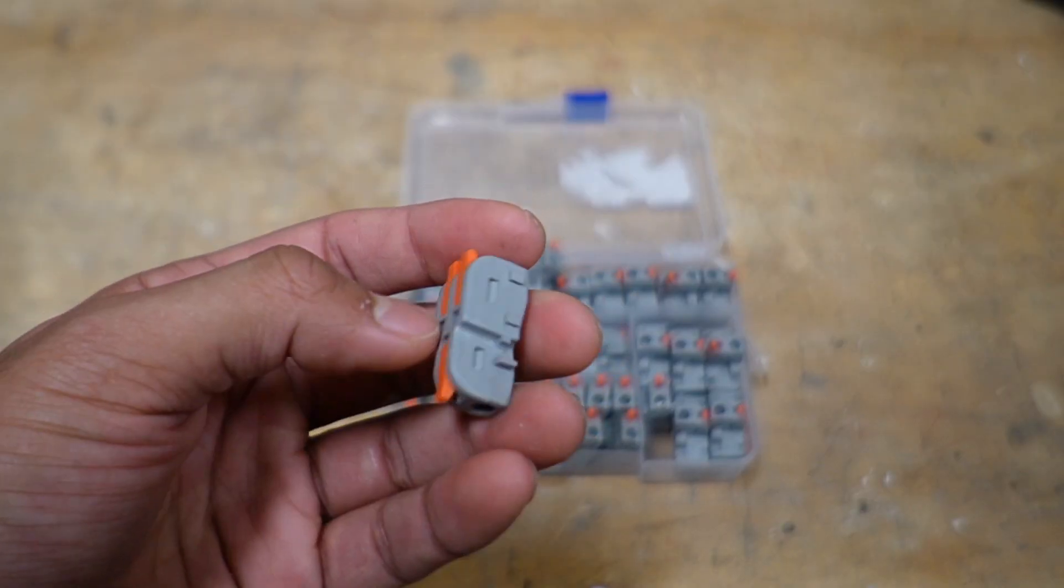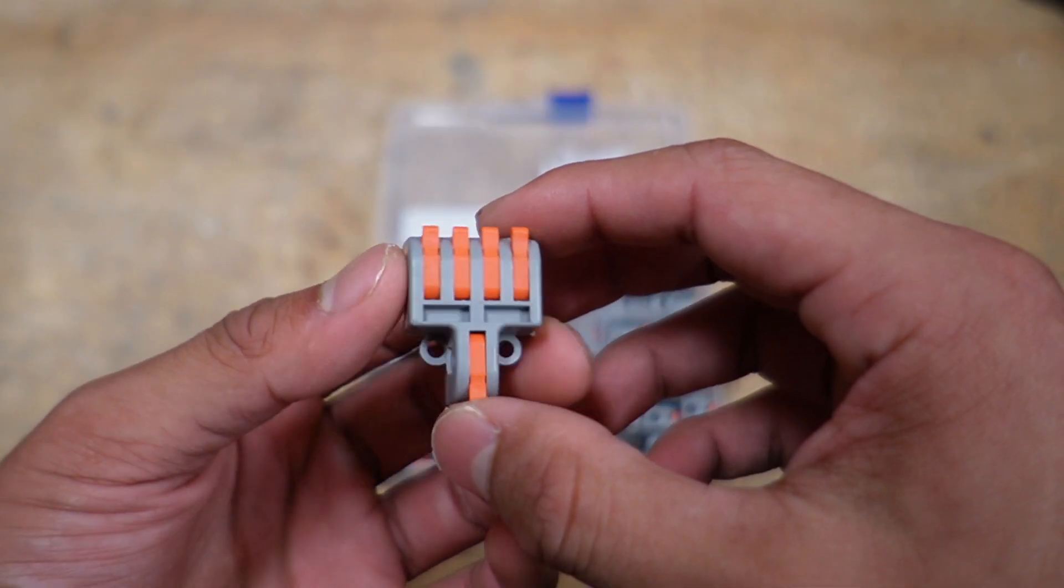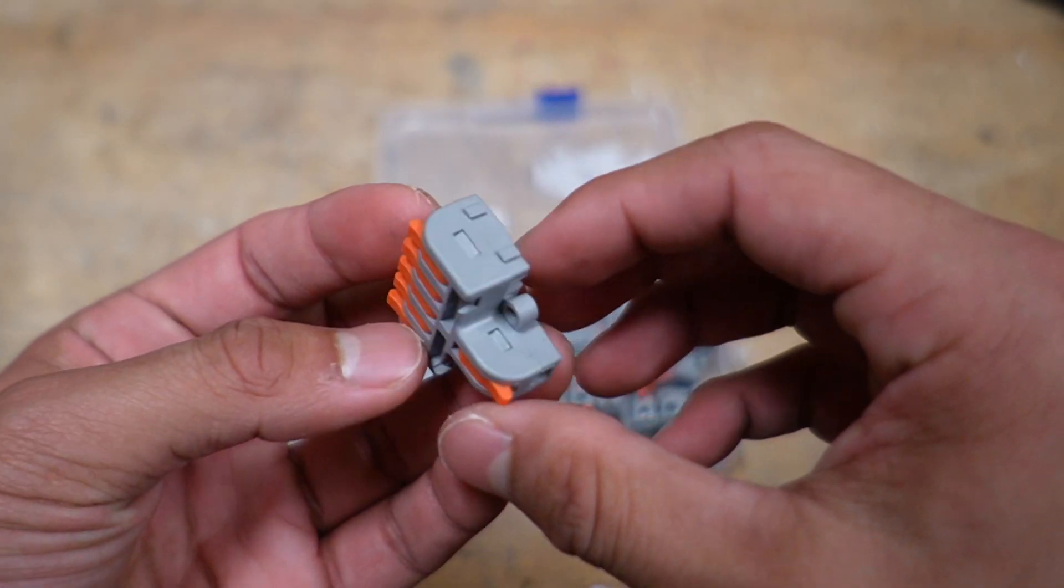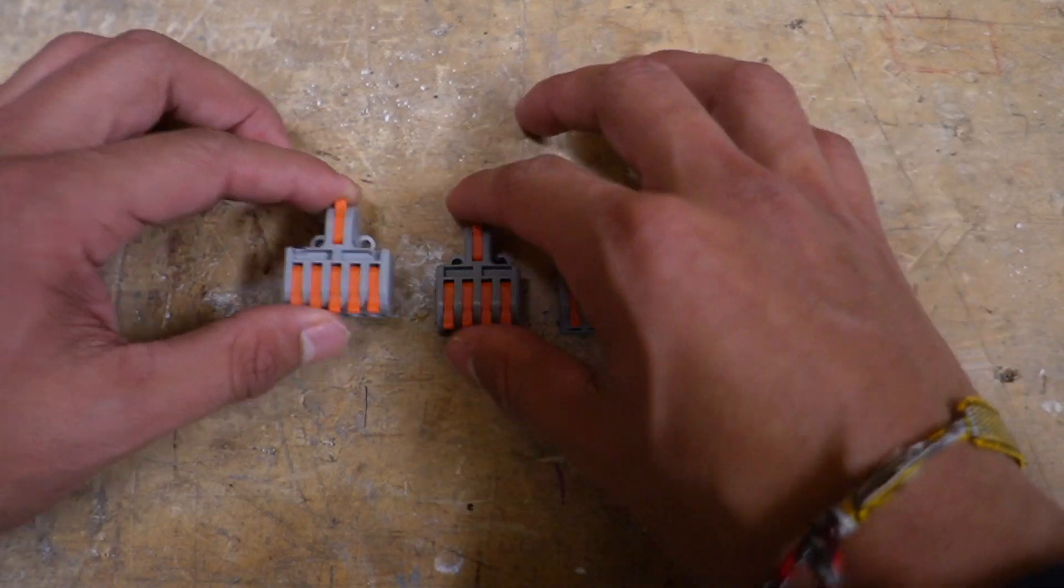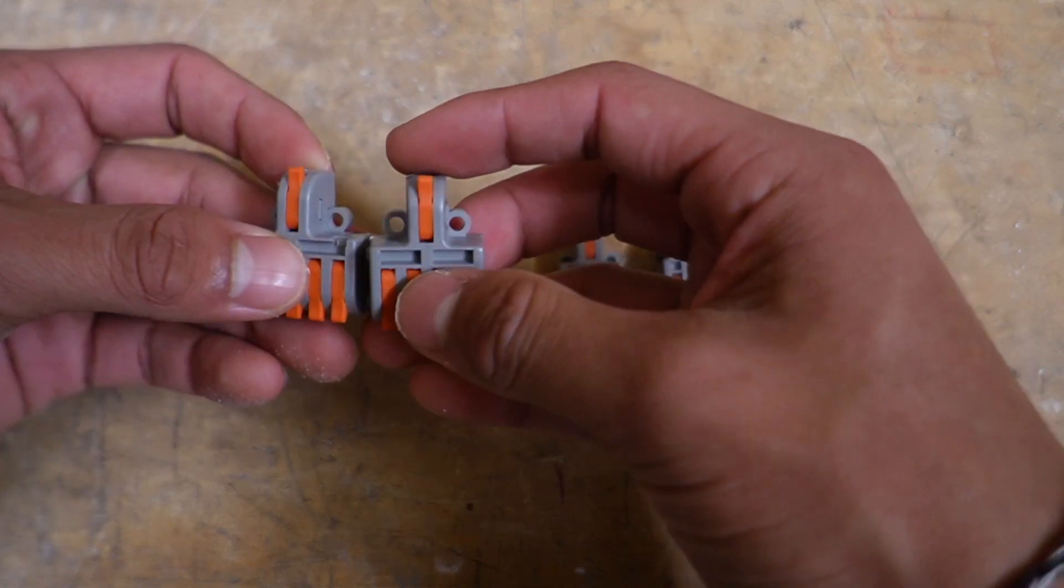So here's the one-to-two connector, the one-to-three connector, the one-to-four connector, and the one-to-five connector. Here's a closer look at all five types, and one thing worth noting is that they can connect with each other.